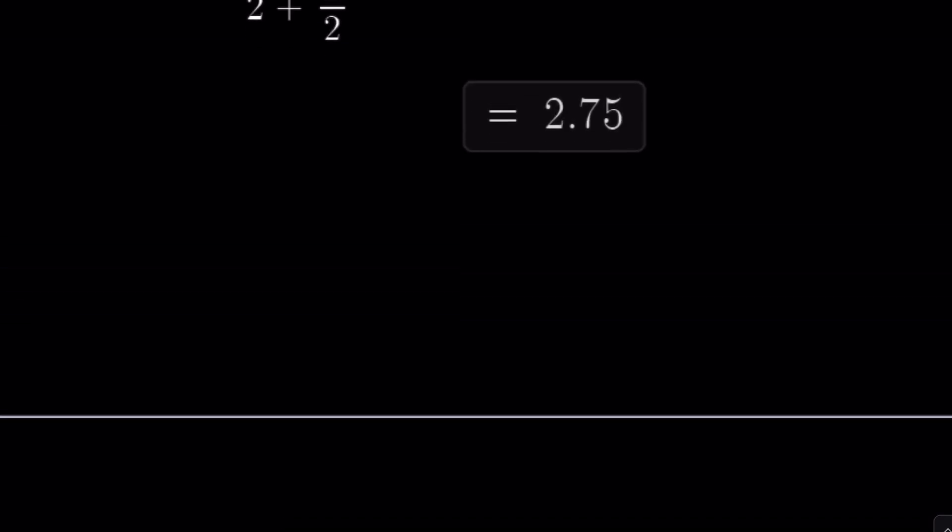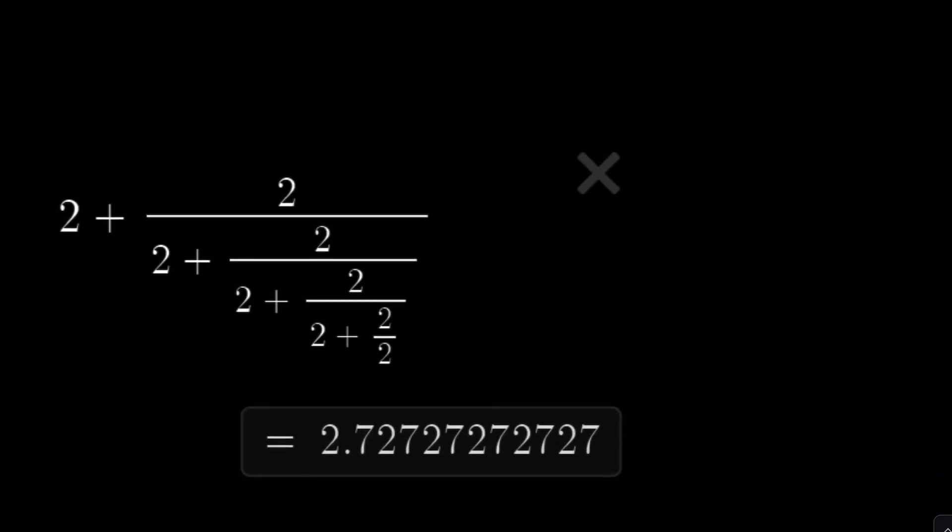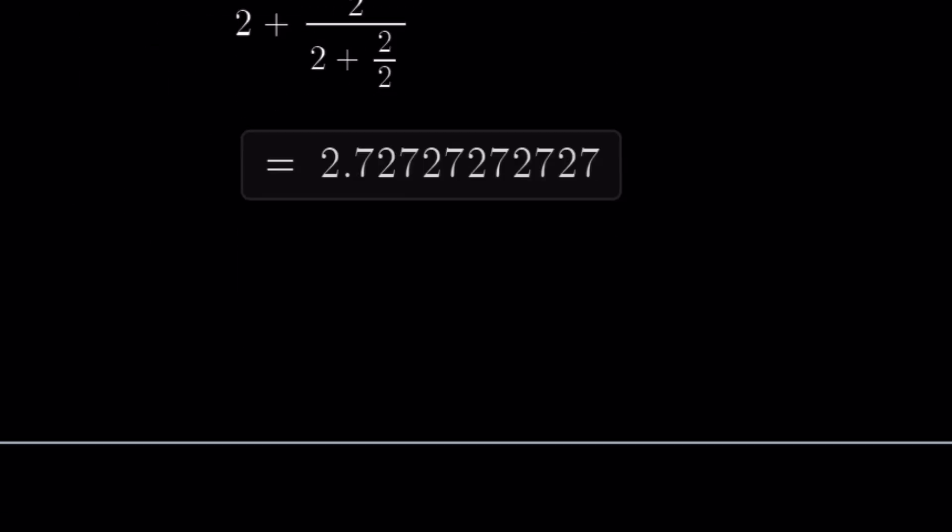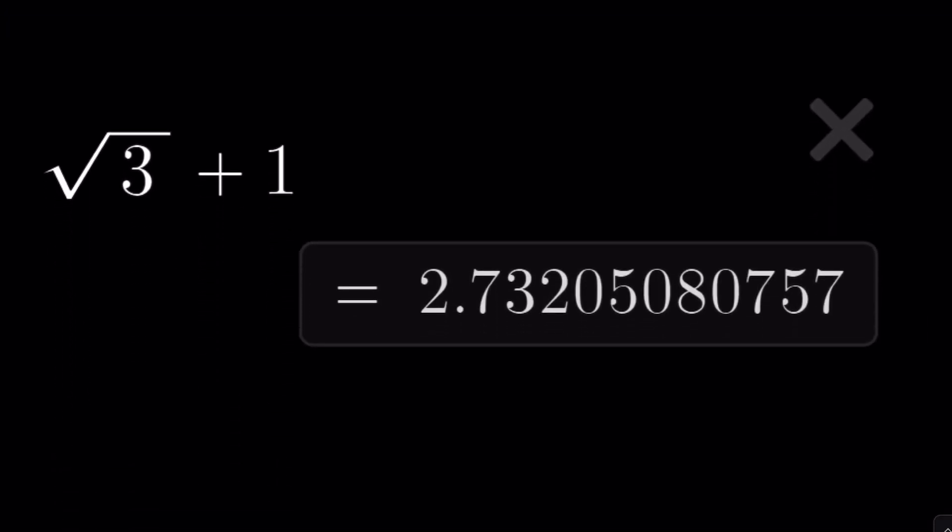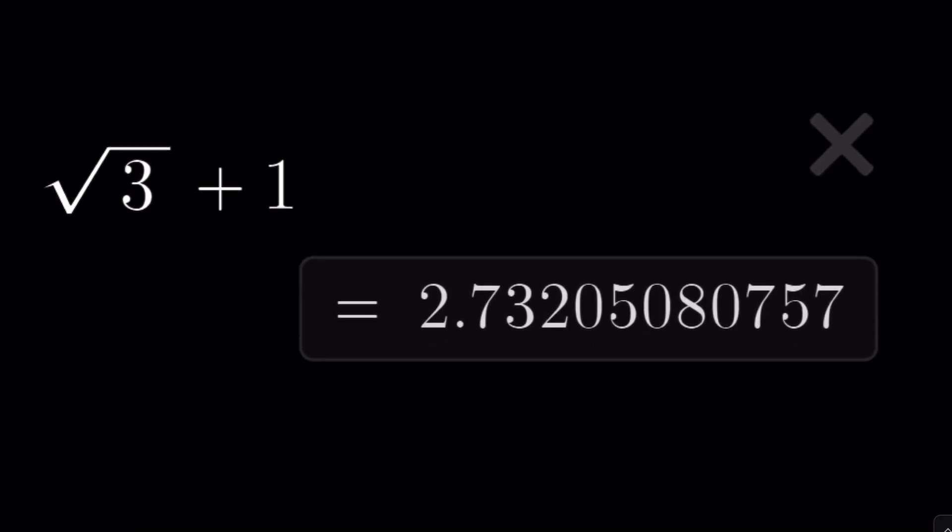Let's go ahead and take a look at one more value. As you see here, the value goes down. And eventually, it's going to give you square root of 3 plus 1, which is about 2.73205080757. And this brings us to the end of this video.